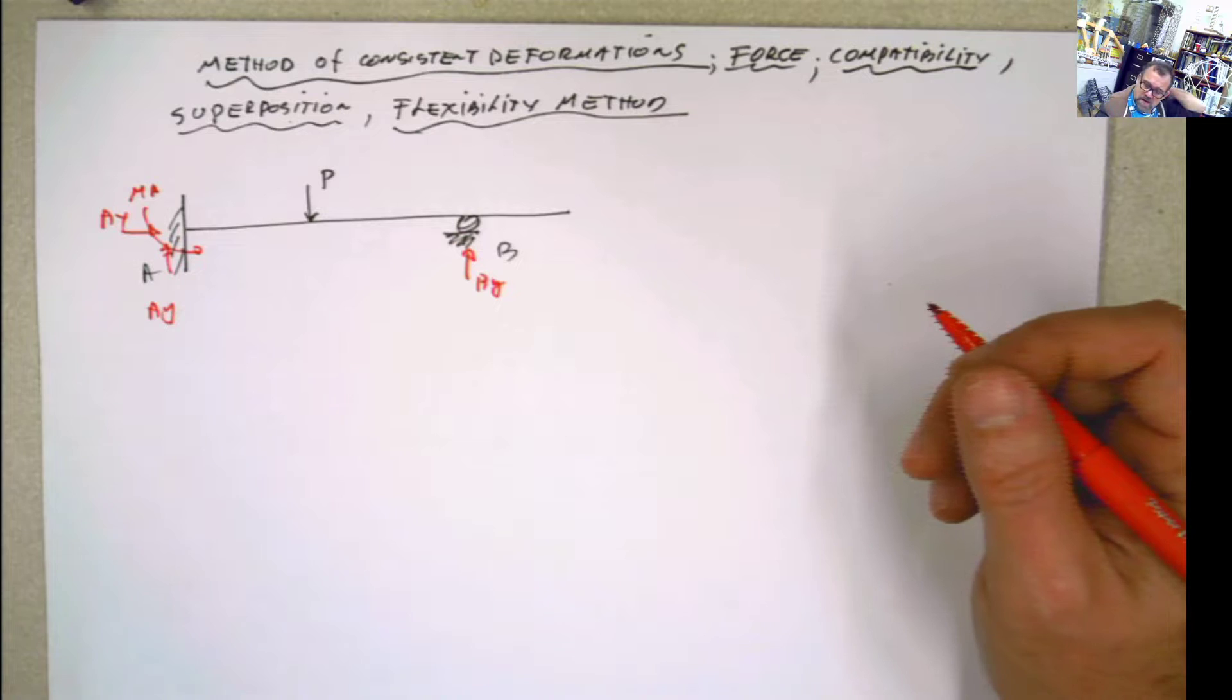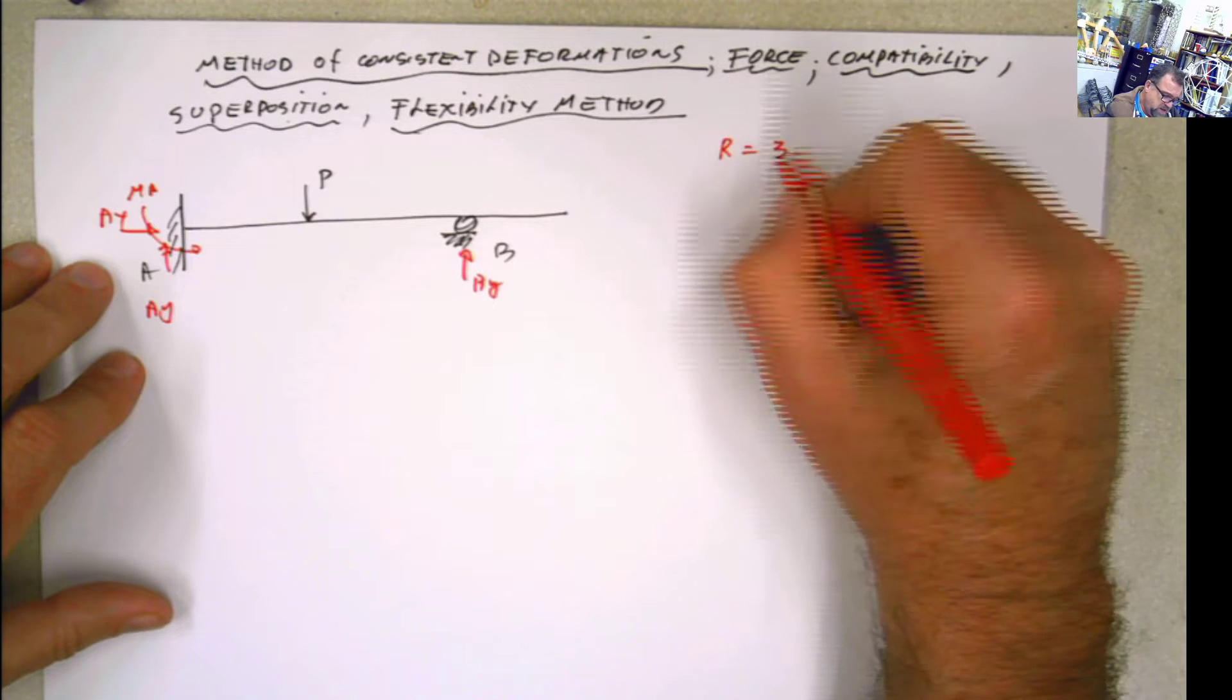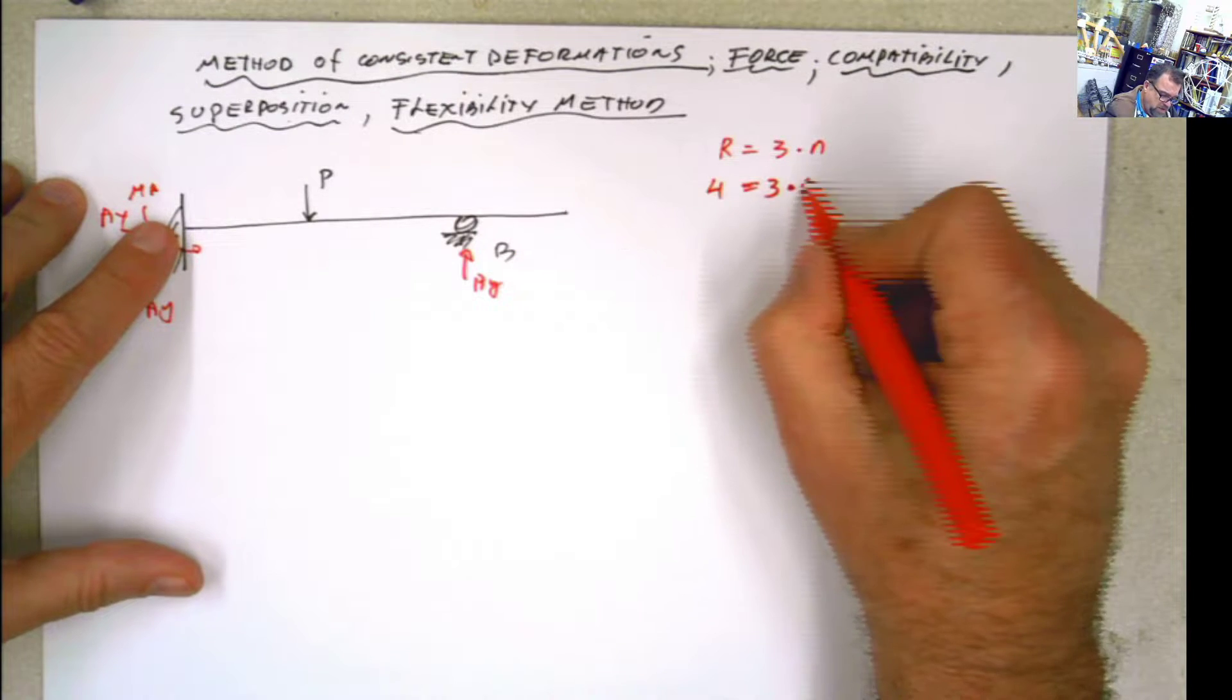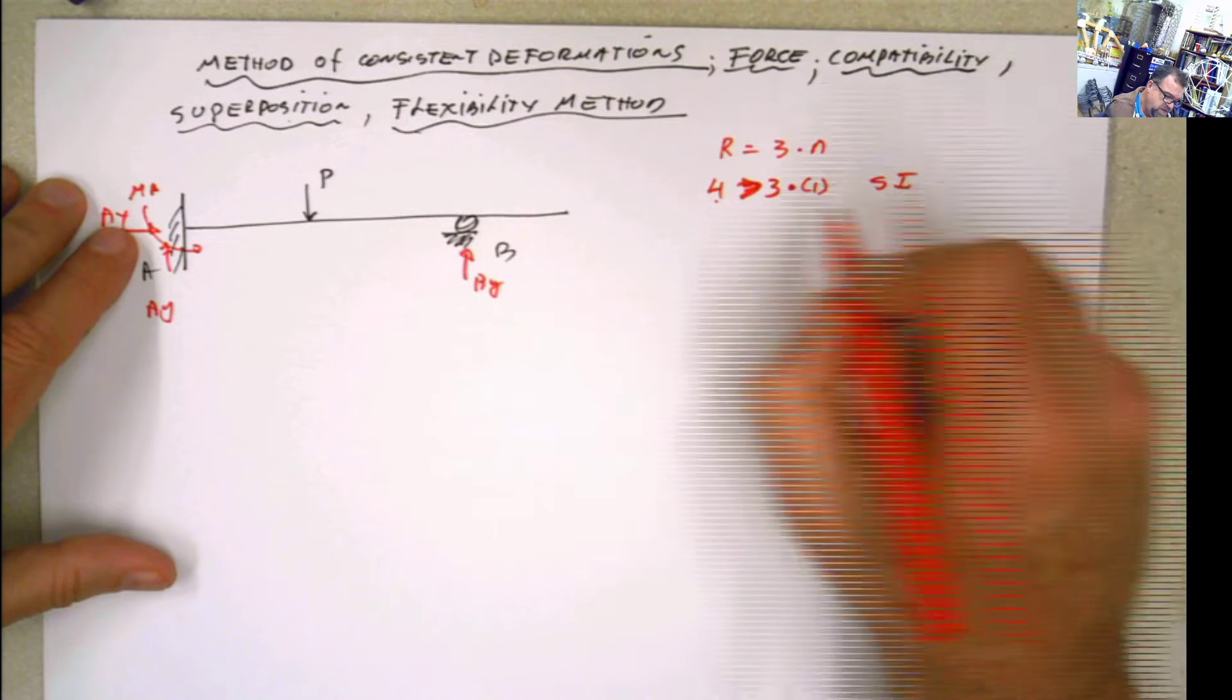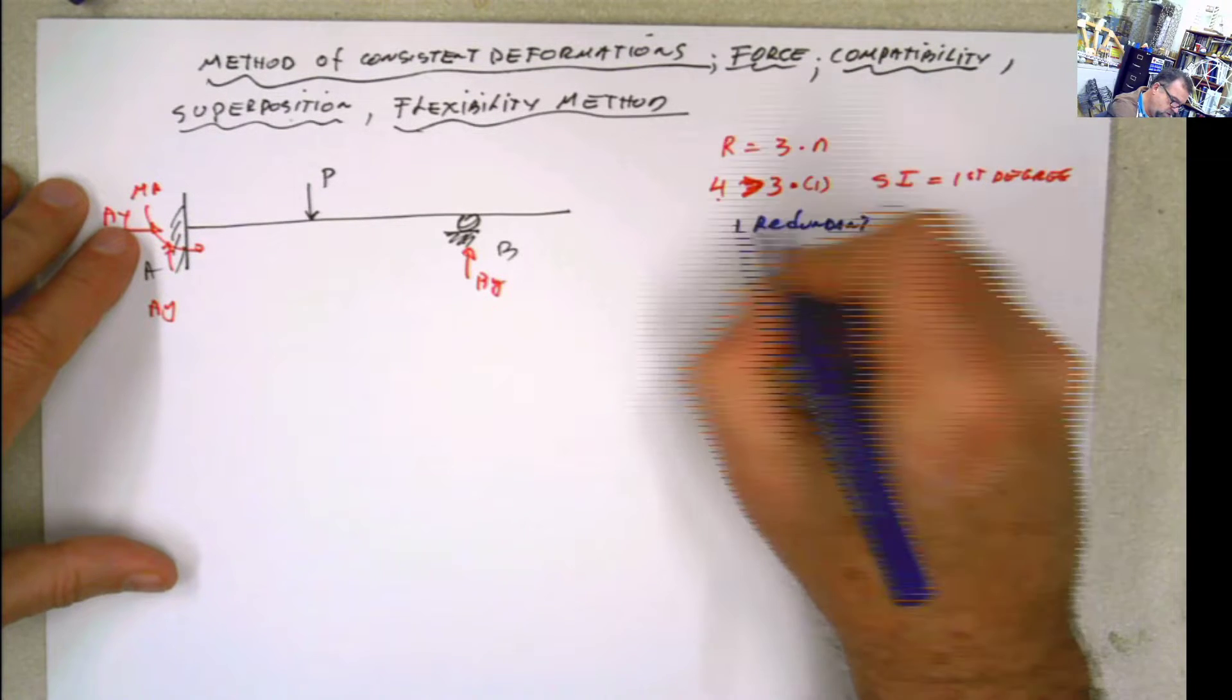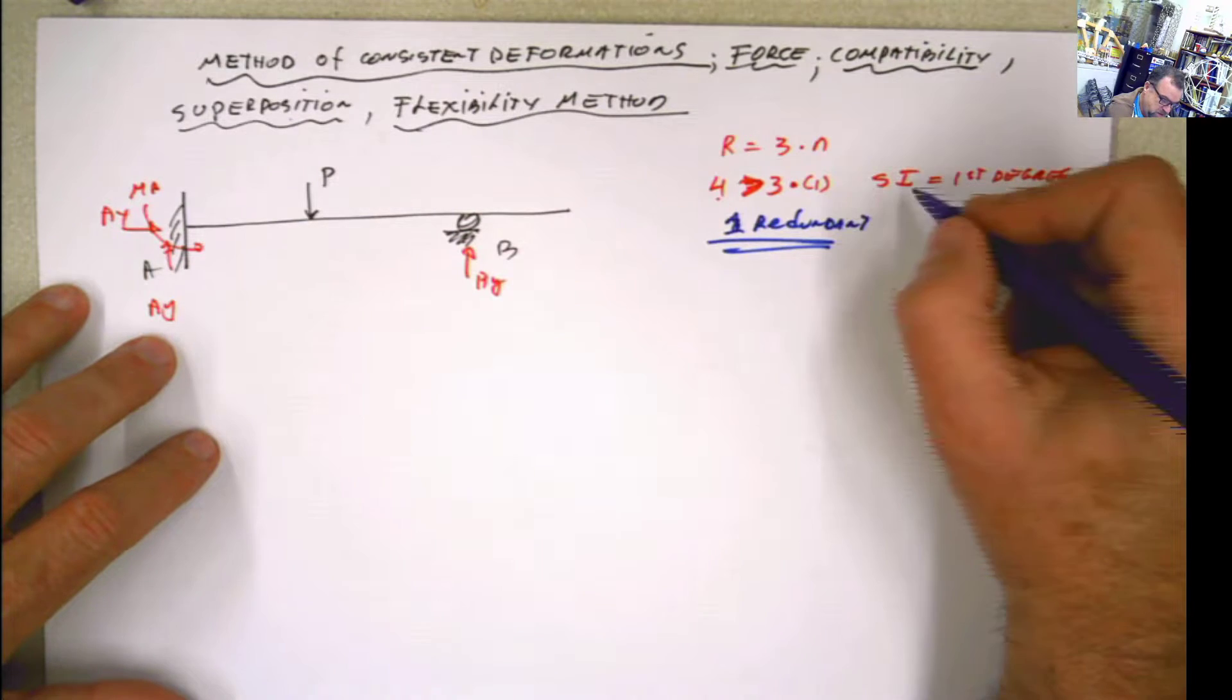And there is a previous video by the way that I explain some pros and cons from statically determinate and indeterminate structures. Remember if the number of reactions is equal to 3 times the number of bodies, then it's statically determined. The number of reactions here is 4, 1, 2, 3, 4. Four reactions has to be equal to 3 times the number of bodies. This is only one body, so it's not equal, it's greater. That is statically indeterminate. And it's statically indeterminate of first degree because 4 minus 3 is 1, which means that you have one redundant. This is a statically indeterminate of first degree with one redundant.